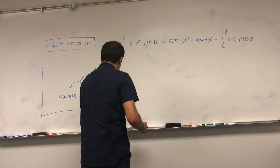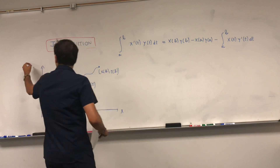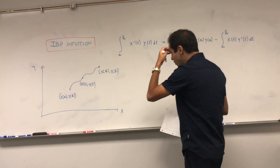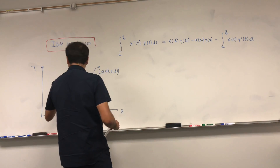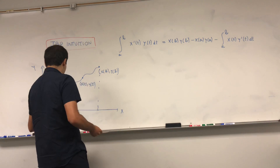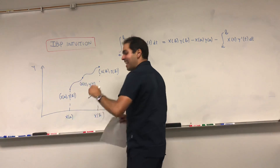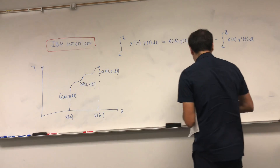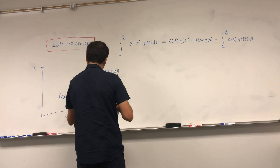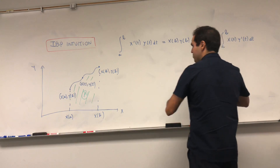Now I want to ask you about the area swept out by this parametric curve. On one hand, let's look at the area in the x region — from x of a to x of b — and call that area A.